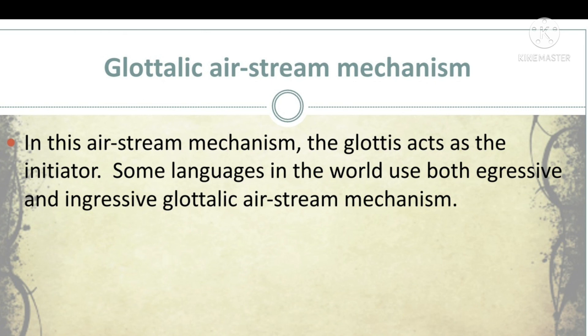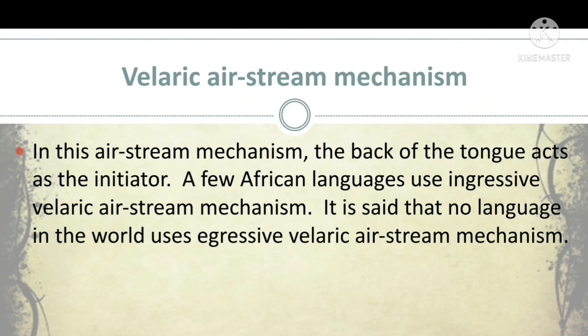Some languages in the world use egressive and some use ingressive glottalic airstream mechanism. The final kind is velaric airstream mechanism. In this, the back of the tongue acts as the initiator. A few African languages use velaric airstream mechanism. It is said that no language in the world uses ingressive pulmonic airstream mechanism as its primary system.